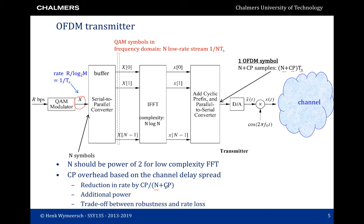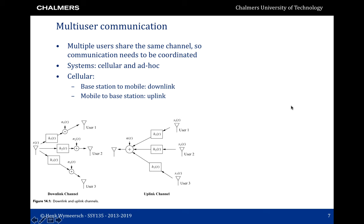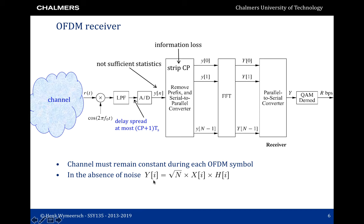At the receiver, we take our incoming waveform, remove the cyclic prefix, convert back to the frequency domain, and demodulate. If the channel is constant for one OFDM symbol and the cyclic prefix exceeds the delay spread of the channel, we find that at the output of the OFDM system, in the absence of noise, the observation on a certain sub-carrier is equal to the transmitted QAM symbol on that sub-carrier times a complex scaling. This avoids the need for complex equalization.